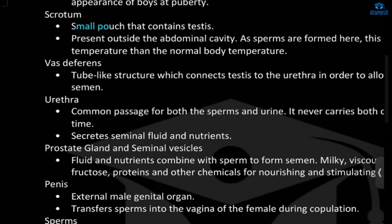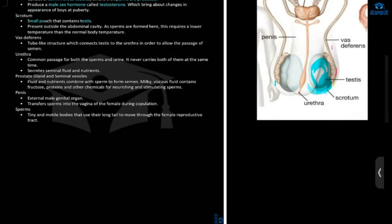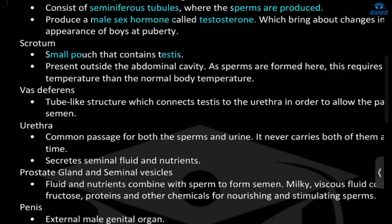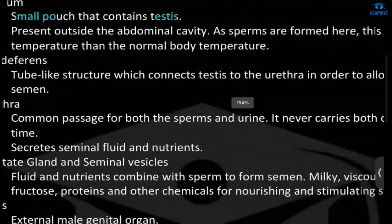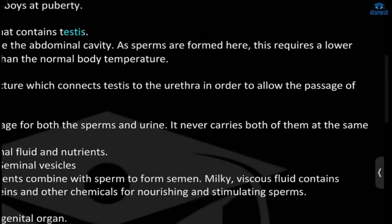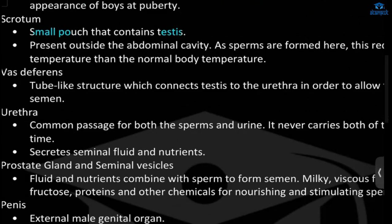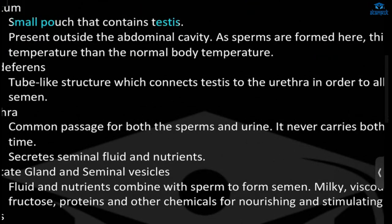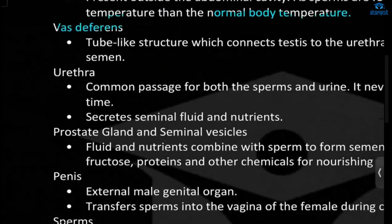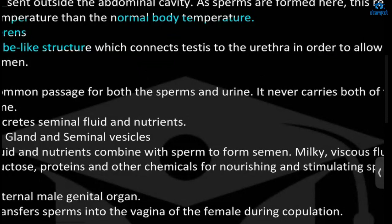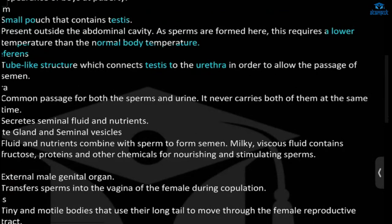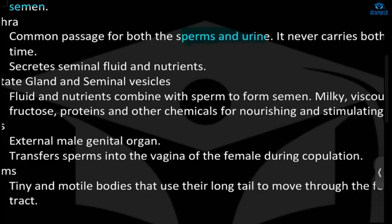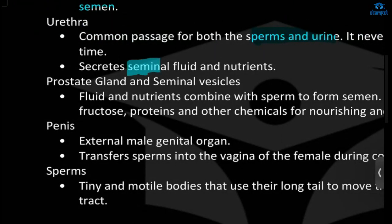The scrotum is a small pouch that contains the testis, which has seminiferous tubules that produce sperms. The scrotum works by lowering the temperature, because for sperm to be produced the temperature must be less than the normal body temperature. Next, we have the vas deferens — a tube-like structure which connects the testis to the urethra, allowing the passage of semen. The urethra is a passage for both sperm and urine. It carries both, and it carries seminal fluid and nutrition.